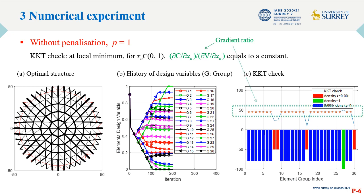The history of the design variables is shown in B, where almost all the elements end up with intermediate design variables. Only one group have a density close to 1, and three groups have density close to 0. The results of the KKT check is shown in C, where the gradient ratios for the elements with intermediate densities are almost the same. This could be an evidence verifying the obtainment of the local minimum.